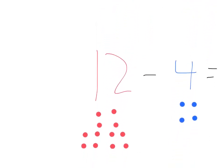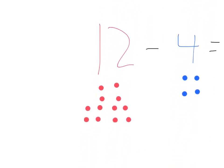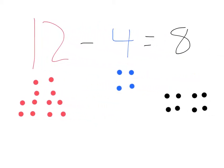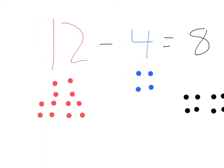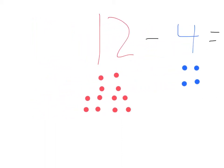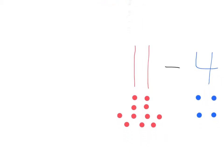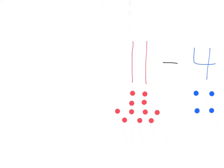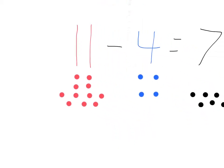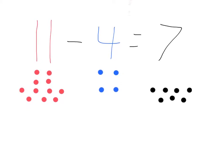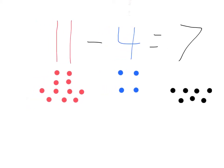12 minus 4 equals 8. Next one: 11 minus 4 equals 7.